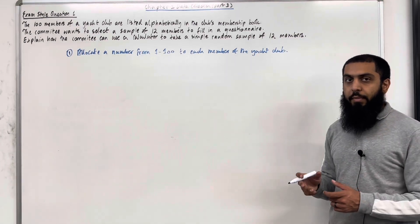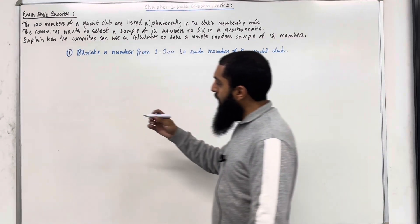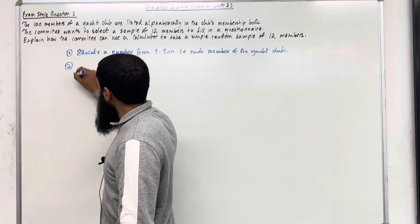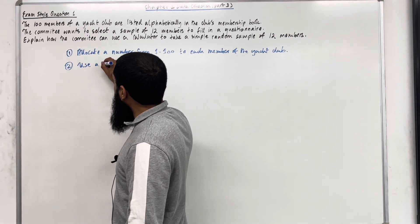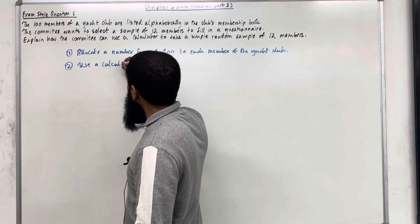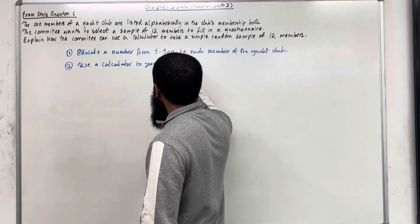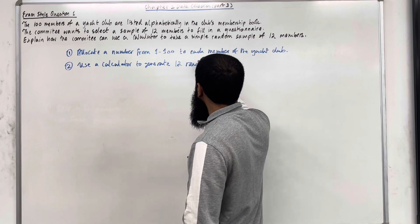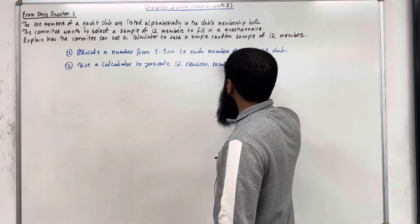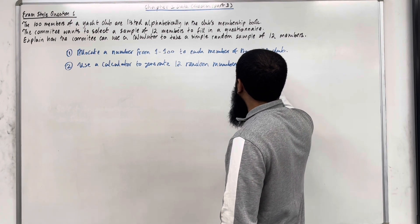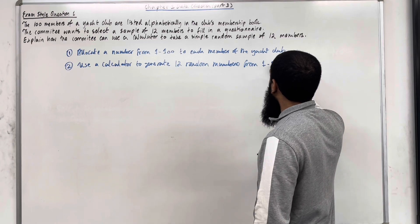Moving on to step number 2: Use a calculator to generate 12 random numbers from 1 to 100.